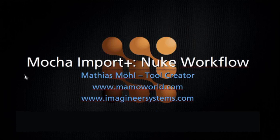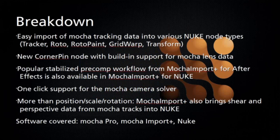Matthias will be going over Mocha Import Plus for Nuke, which does an easy import of Mocha tracking data into various Nuke node types like the Tracker node, Roto node, Rotopaint, Grid Warp, and Transform. It also does a new Corner Pin node with built-in support for Mocha Lens data, and a popular stabilized pre-comp workflow. It also does one-click support for the Mocha Camera Solver, and Mocha Import Plus makes the node tree for you automatically.